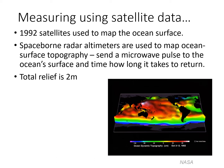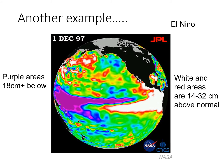The ocean surface has a topography of about 2 meters. This is an interesting example of using sea level to understand climatic events such as El Niño. During an El Niño, ocean waters flow back towards South America, resulting in higher sea level off the coast of South America. White and red areas are 14 to 32 centimeters above normal, whereas purple areas are at least 18 centimeters below normal. This was the large El Niño event in 1997.